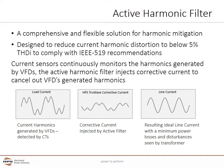Active harmonic filters use current sensors to continuously monitor the harmonics generated by variable frequency drives. The active harmonic filter injects corrective current that is equal to but opposite in phase to cancel out the VFD's generated current harmonics. The pictures at the bottom of the page show how this current injection and correction works to cancel out the harmonics.